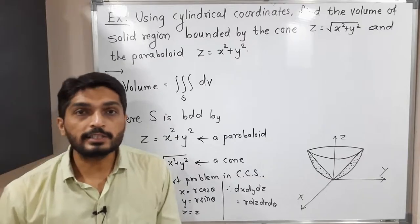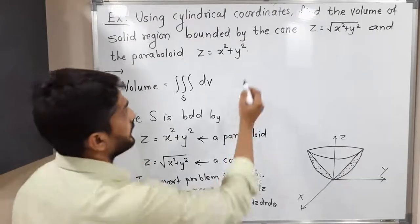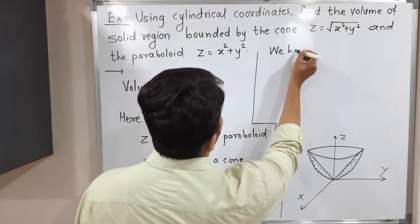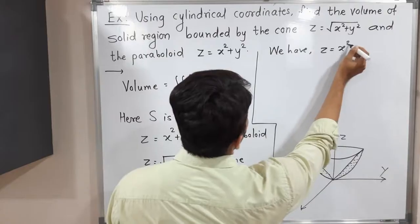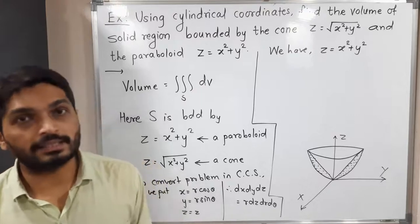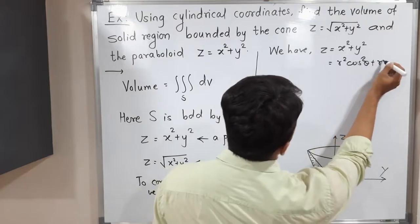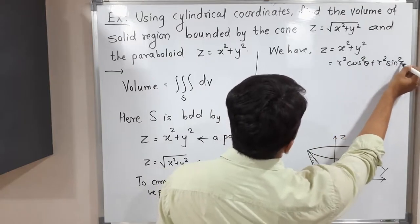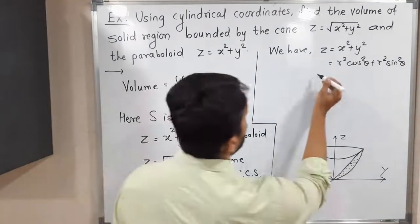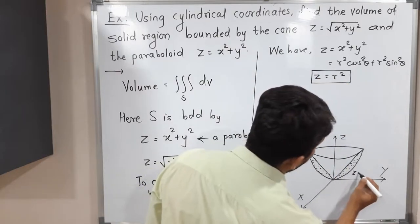After substitution, we convert all equations to cylindrical coordinates. Starting with the paraboloid: the equation is z equals x squared plus y squared. Substituting x equals r cos θ and y equals r sin θ, we get r² cos²θ plus r² sin²θ. Taking r² common gives cos²θ plus sin²θ, which equals 1. So z equals r² is the equation of the paraboloid in cylindrical form.